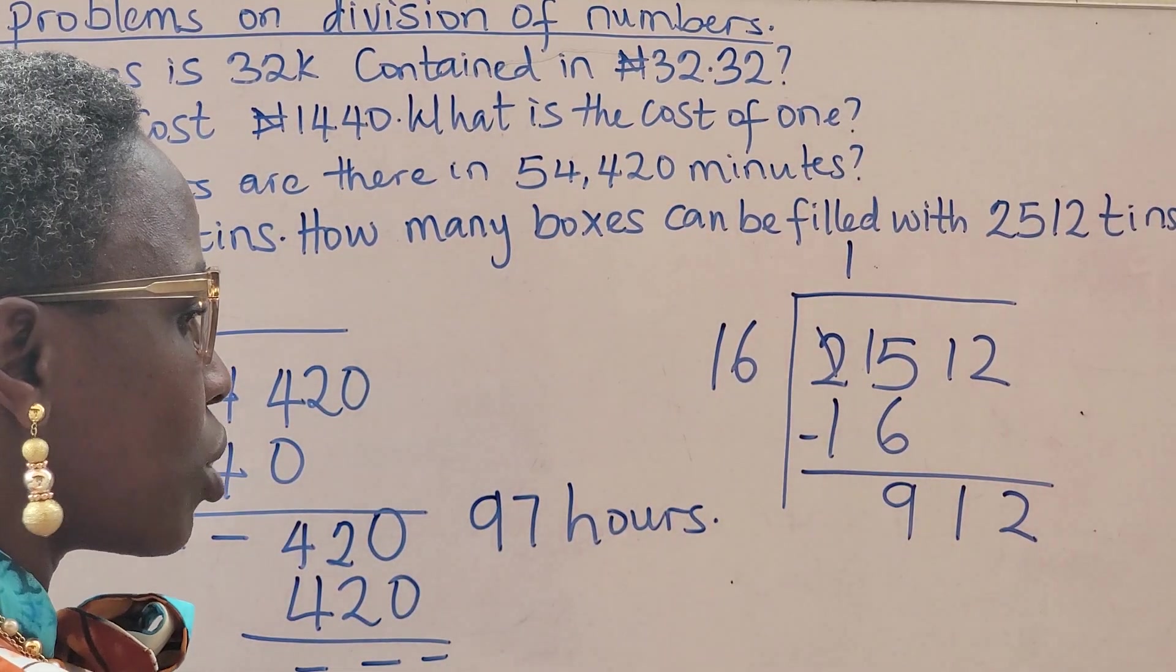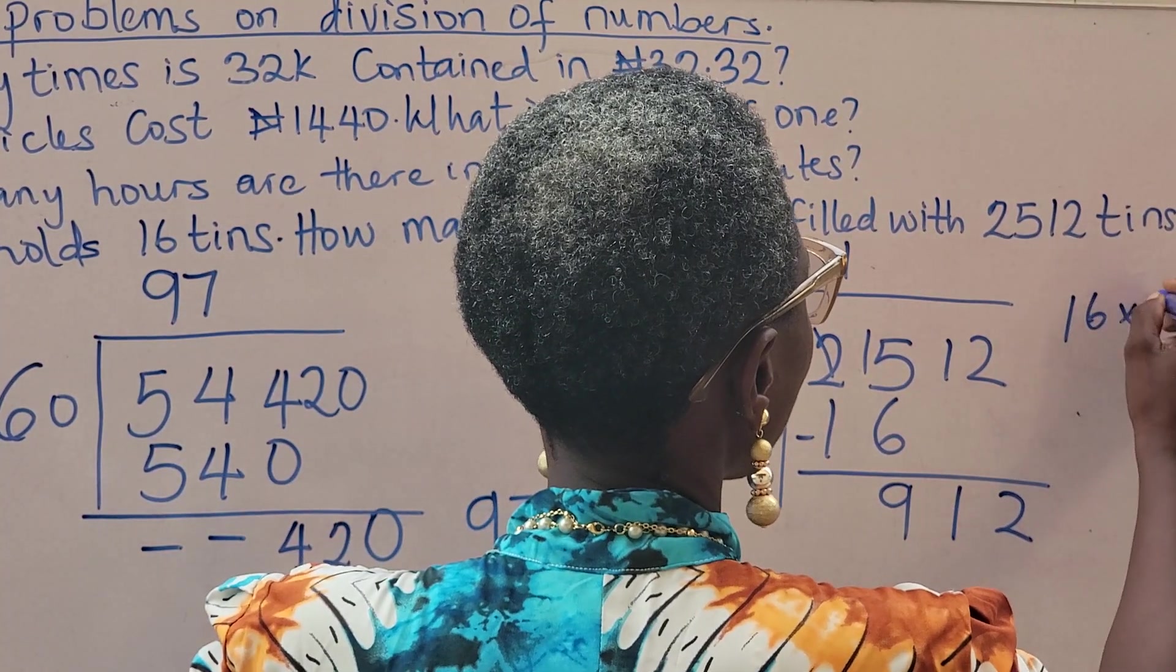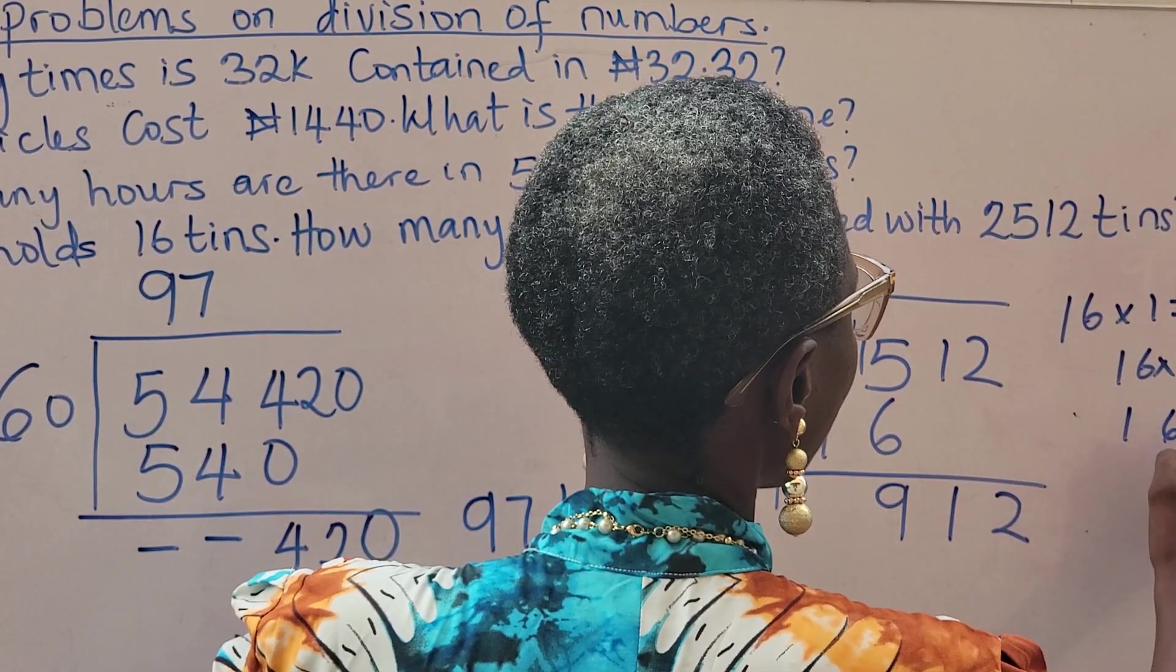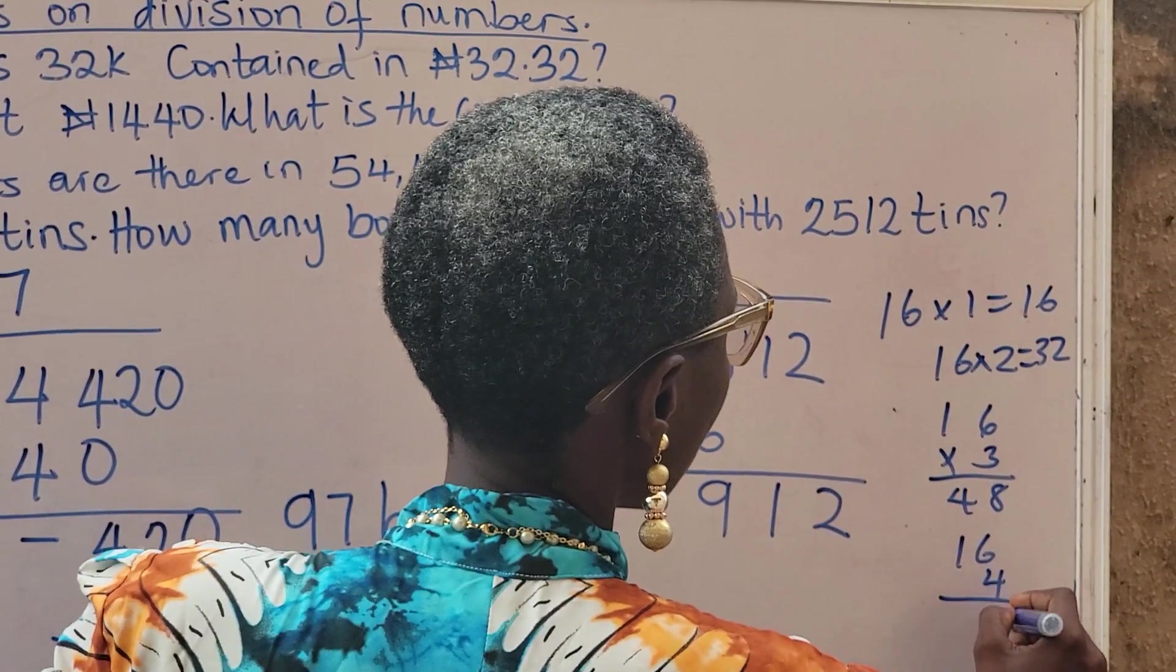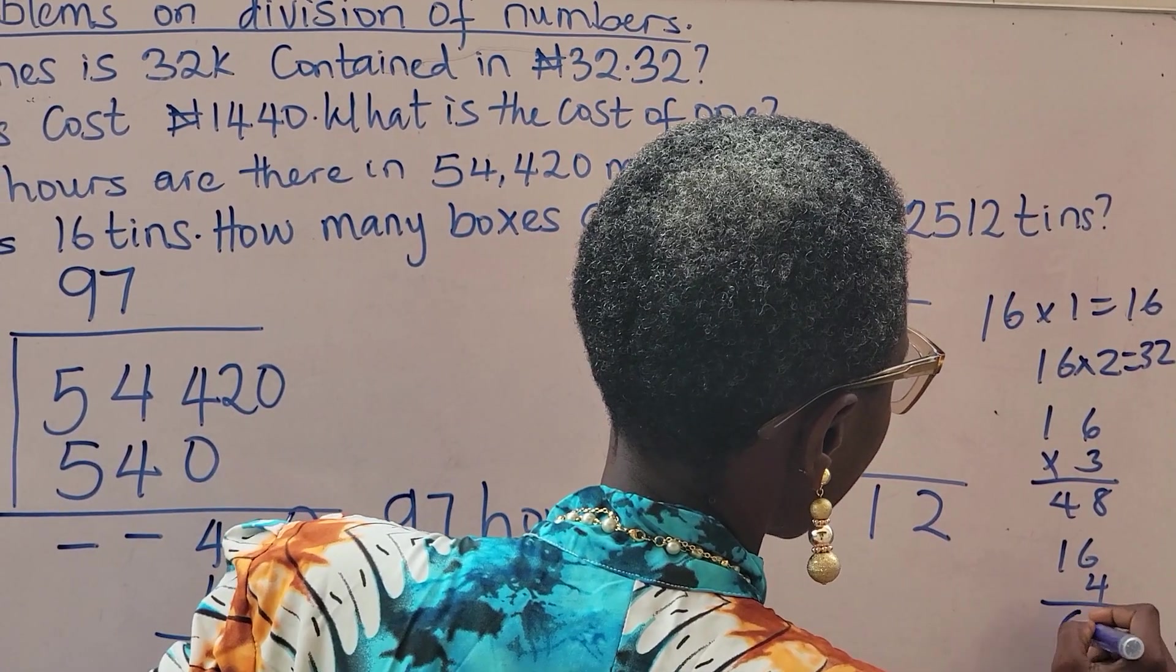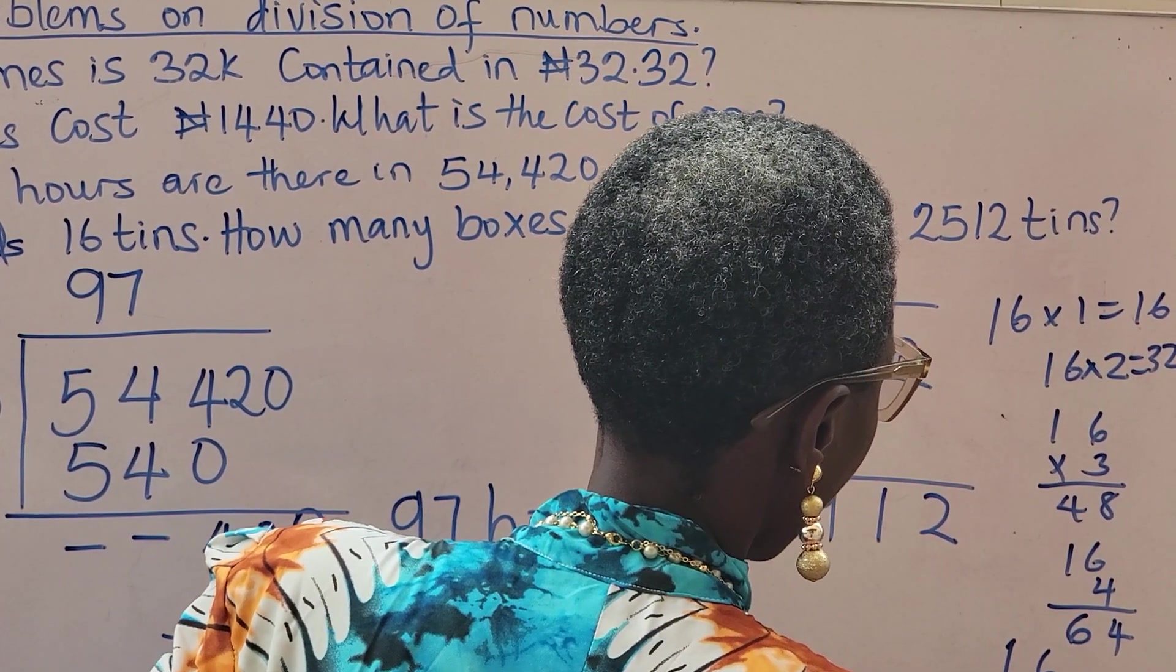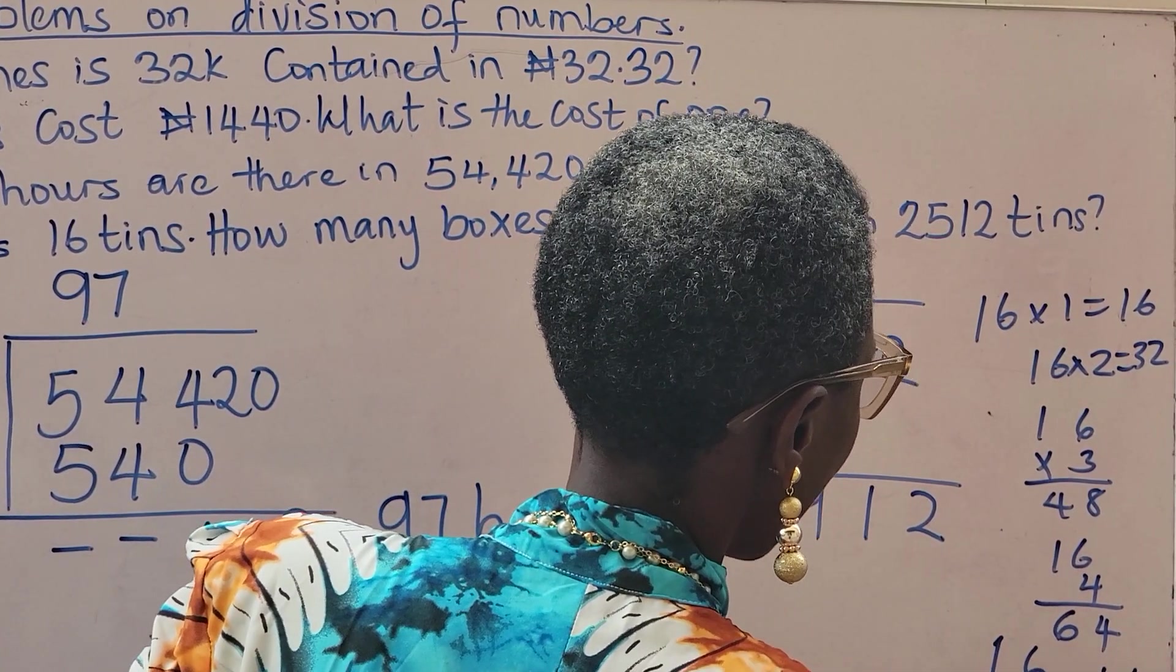Do your table 16. 16 times 1 is 16, 16 times 2 is 32, 16 times 3 is 48, 16 times 4 is 64, 16 times 5, that's 80. 16 times 6, that's 96.